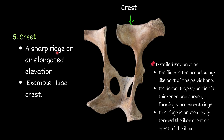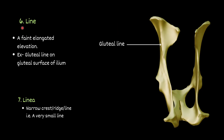Crest — a sharp ridge or elongated elevation. For example, iliac crest. You can see this structure — this is called the crest of the ilium, or iliac crest. Then line — an elongated elevation, for example the gluteal line on the gluteal surface of the ilium. You can see this line here — this line is the gluteal line.